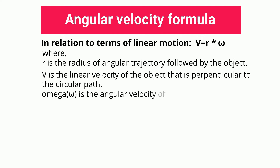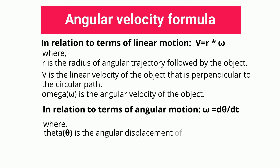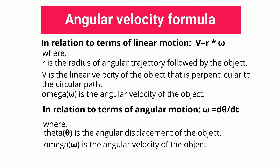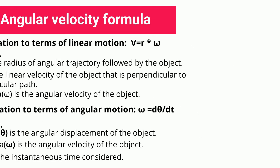In relation to terms of angular motion: omega (ω) is the angular velocity of the object, theta (θ) is the angular displacement of the object, and dt is the instantaneous time considered.